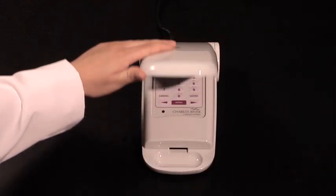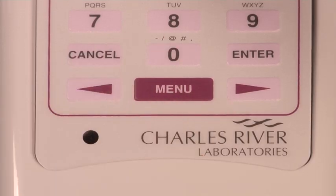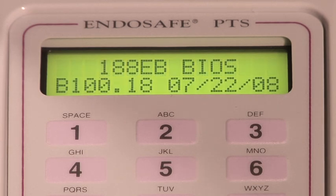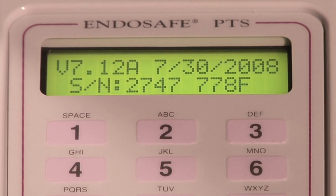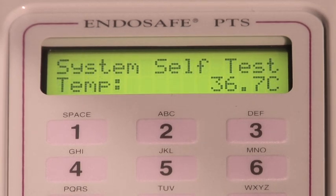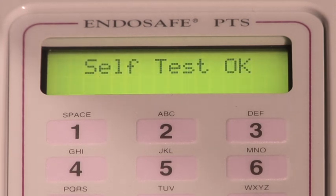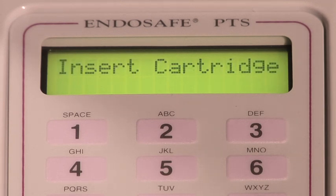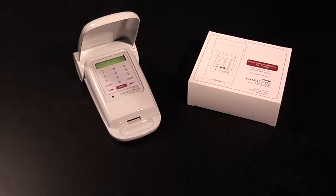To begin the process, turn the PTS reader on by pressing the MENU key. After pressing the MENU key, the reader begins a system self-test and will take approximately 5 minutes to reach the appropriate 37 degrees Celsius. Once the reader reaches this temperature, the display will change from system self-test to insert cartridge. You are ready to begin.